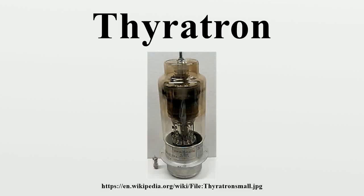A thyrotron is a type of gas-filled tube used as a high-power electrical switch and controlled rectifier. Because of the gas-fill, thyrotrons can handle much greater currents than similar hard vacuum tubes. Since electron multiplication occurs in the ionized gas — the phenomenon called Townsend discharge — gases used include mercury vapor, xenon, neon, and hydrogen. Unlike a vacuum tube, a thyrotron cannot be used to amplify signals linearly.